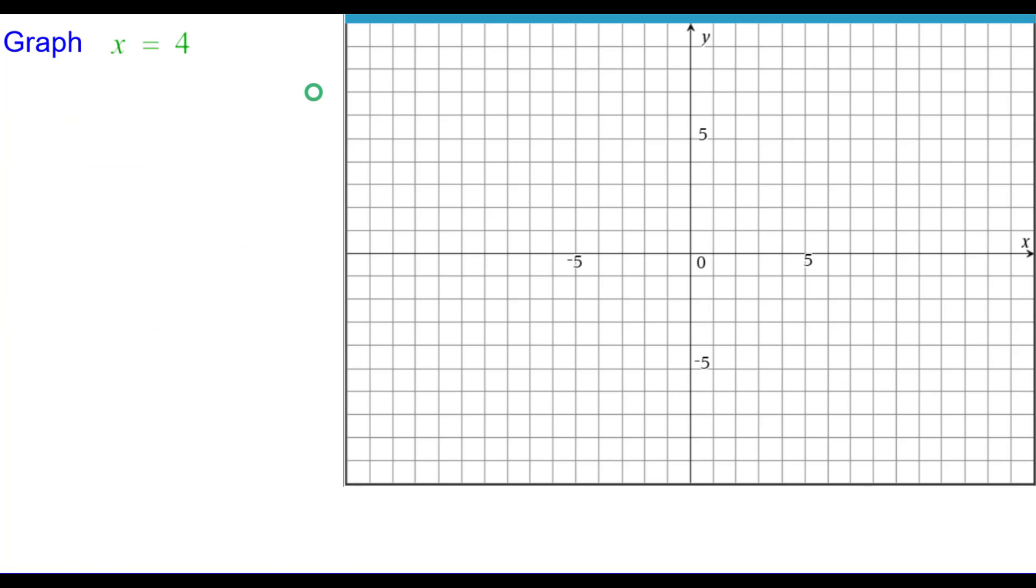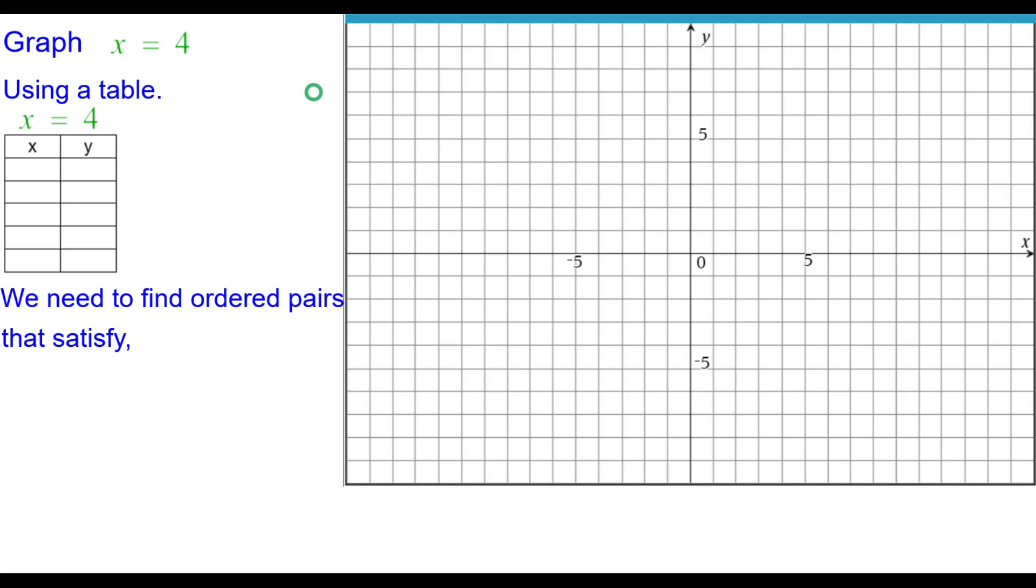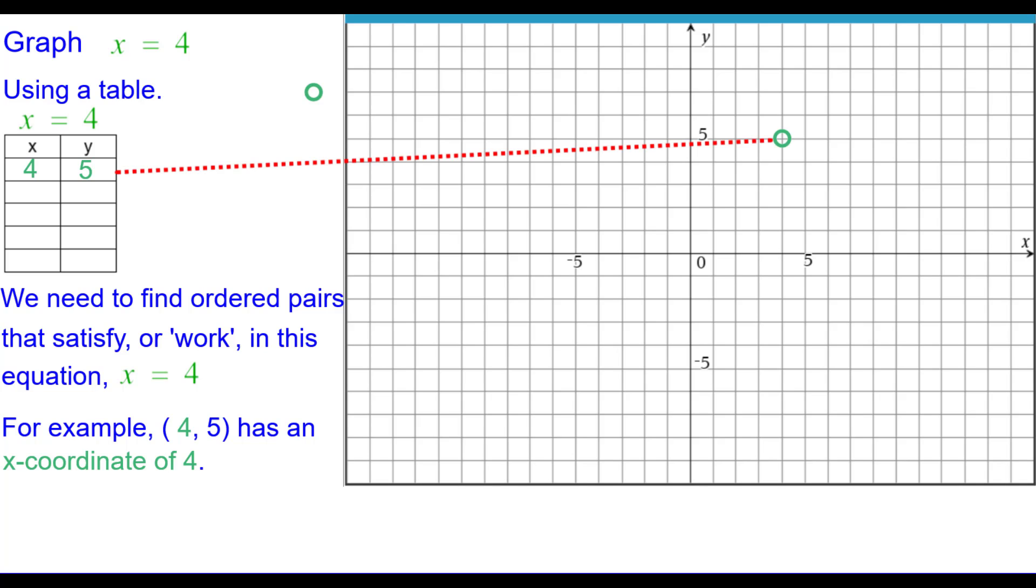Graph x equals 4 using a table. We need to find ordered pairs that satisfy or work in this equation x equals 4. For example, the ordered pair has an x-coordinate of 4, so we can put that in the table and then plot it. A second example would be. Put that in the table and plot that.